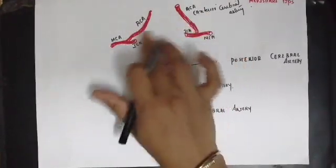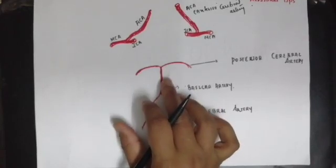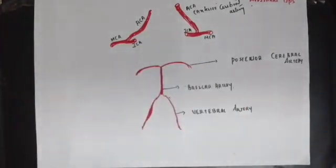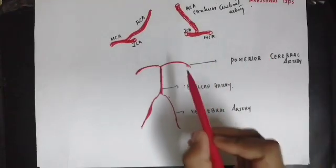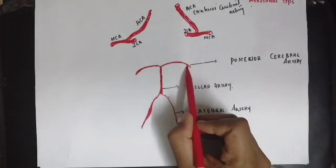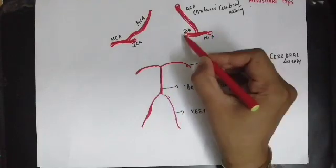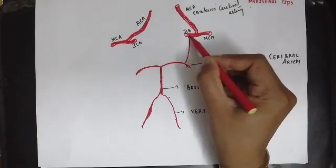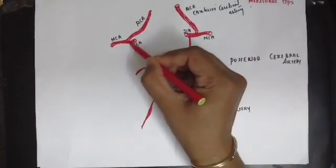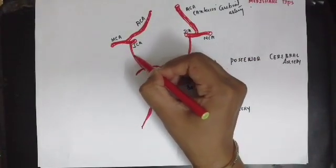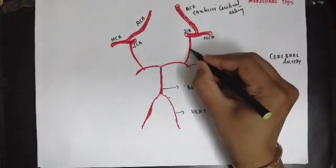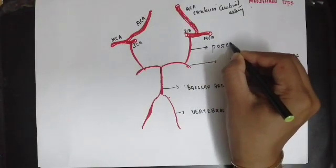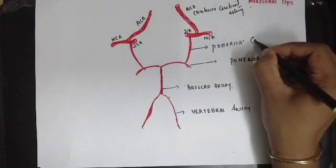This is the internal carotid system, and this is the vertebral basilar system. There is a connection between the two systems. There is a connection between the posterior cerebral artery and the internal carotid artery on both sides, and this connection is known as the posterior communicating artery.